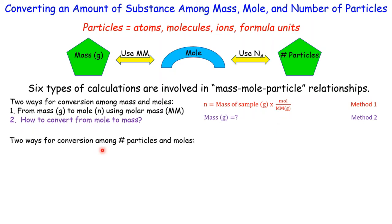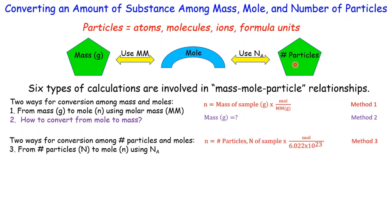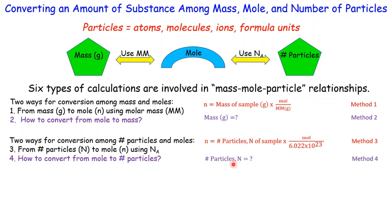Methods three and four involve conversions between number of particles and moles. Method three is from particles to moles: start with particles, use Avogadro's number as the conversion factor with particles on the bottom and moles on top. Method four is the opposite — from moles to particles — using the reciprocal of Avogadro's number.